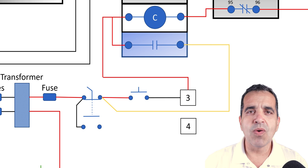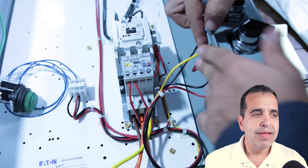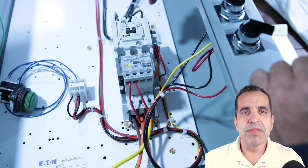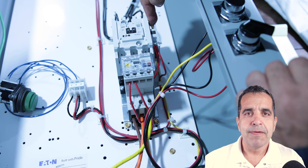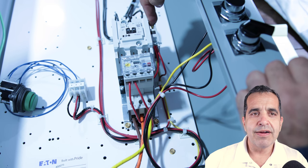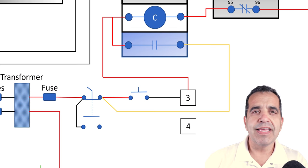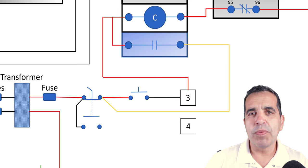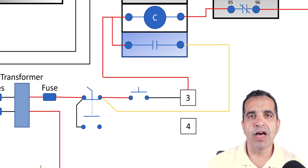The holding contact is a yellow wire going from the supply side to our start button. It's going from that wire over and feeding the other side of our normally open contact on our contactor.